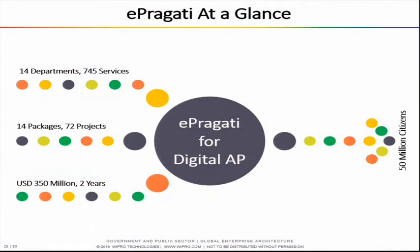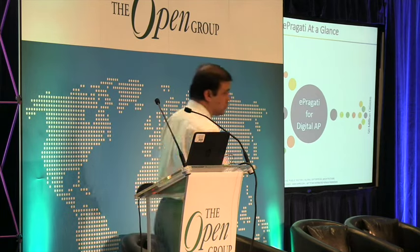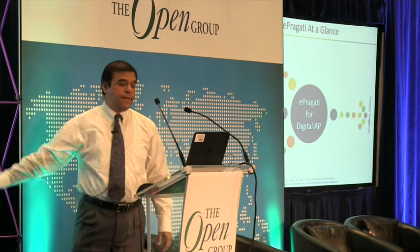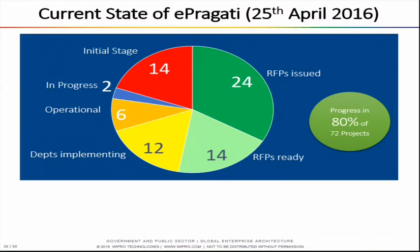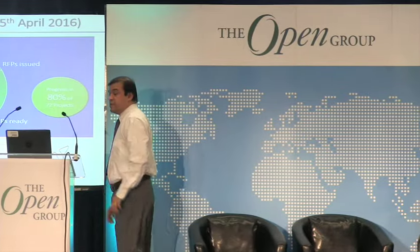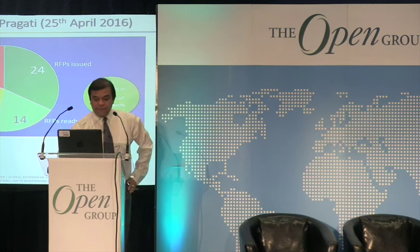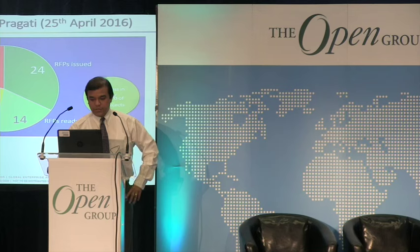In summary: 14 departments, 745 services, 14 packages, 72 projects. The total implementation budget is $350 million spent over the next two years; the impact is 50 million people — the entire population of the state. As of now, 24 RFPs have been issued publicly with all major companies in the world responding. 14 more RFPs are ready to be issued by end of May. 12 initiatives are already being implemented, and a few are in initial stages, giving a general sense of where we are across those 72 initiatives.